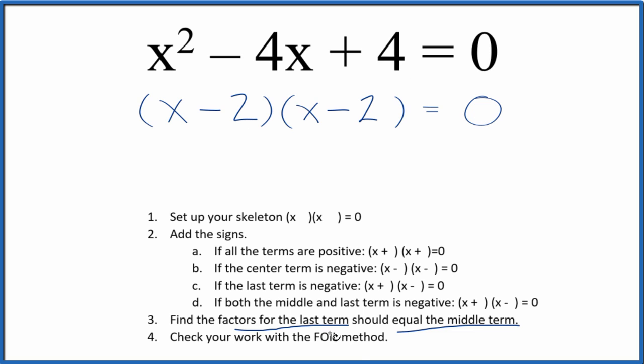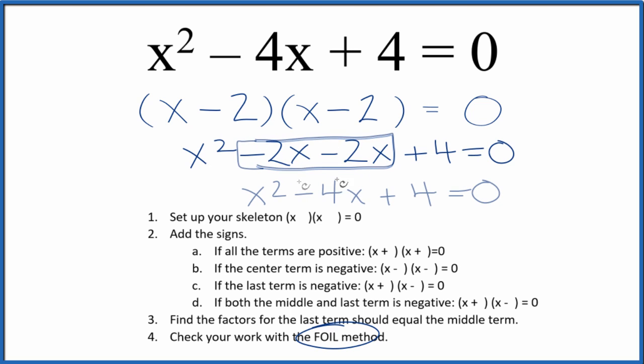We should check our work, though, with the FOIL method. So we'll multiply the first, the outside, the inside, and then the last. That'll give us, and we can combine these two terms right here, and this is what we started out with up here. So we know we did this correctly.